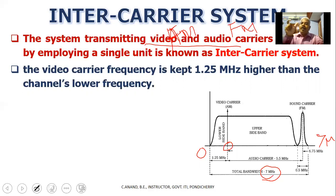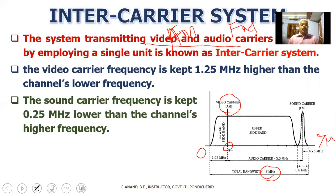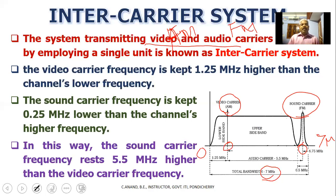What is the carrier frequency for the video signal? Video is amplitude modulated. The video carrier is 1.25 MHz higher than the channel's lower frequency. The sound carrier frequency is kept 0.25 MHz lower than the channel's upper frequency. The sound carrier is a frequency modulated signal.